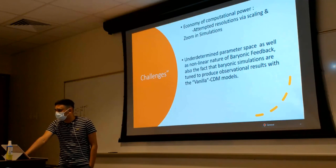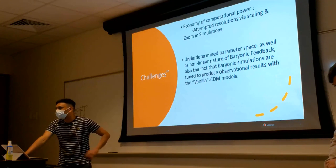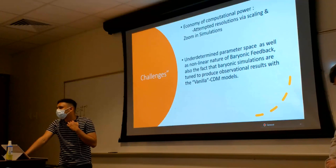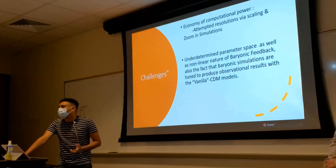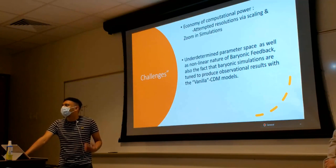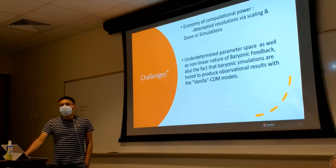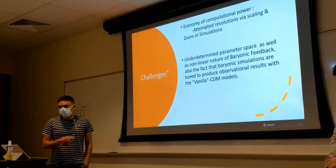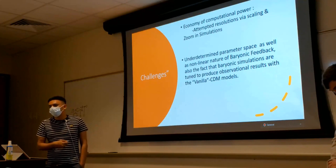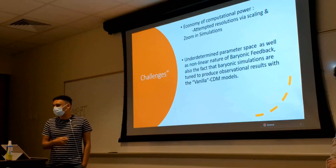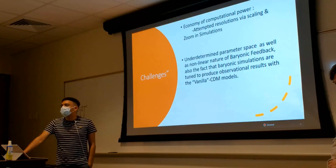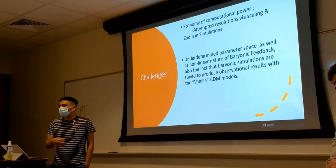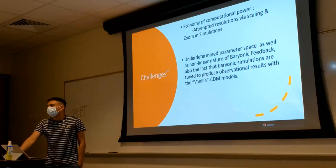On what baryonic components are included: currently in the simulations done so far, AGN feedback has not been added, though there is an option for it. For a realistic simulation we need AGN feedback. It's not thought to significantly change large scale structure, but it does affect what you observe because it can significantly suppress star formation. And that matters because that is where the predictive power comes from.